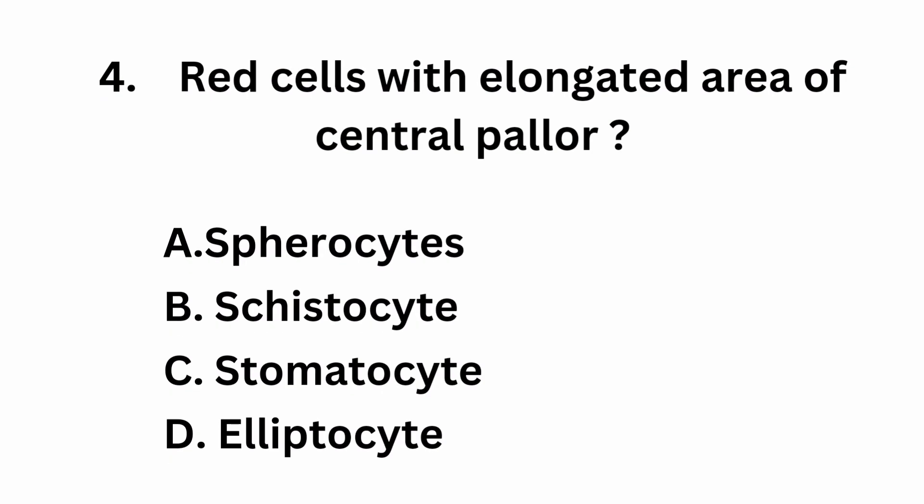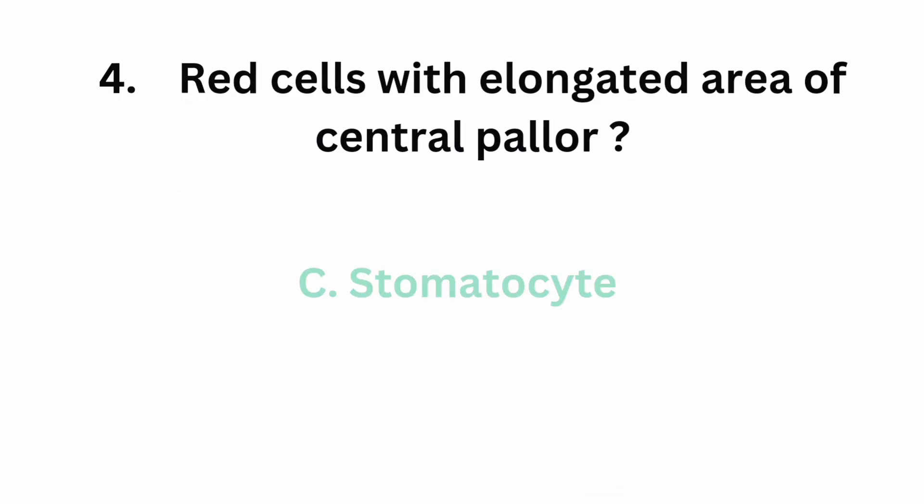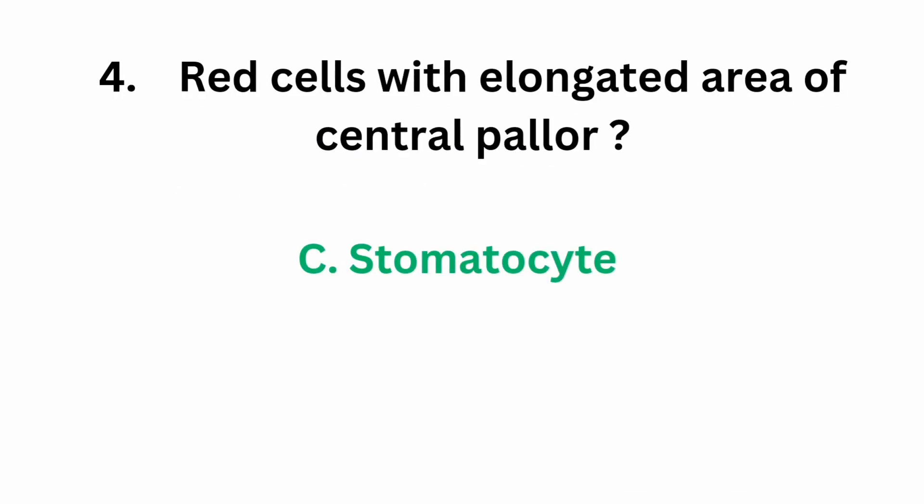Question number 4: red cells with elongated area of central pallor. Option A, spherocyte. Option B, schistocyte. Option C, stomatocyte. Option D, elliptocyte. The correct answer is stomatocyte. Stomatocyte is a slit-like cell.